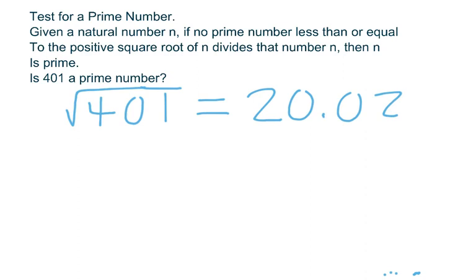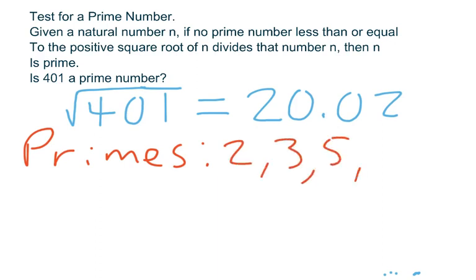You think about all the prime numbers that you know that are less than or equal to 20.02. You might use a sieve of Eratosthenes. You might have just a list of primes in your head. But the prime numbers that are less than or equal to 20.02 are 2, 3, 5, 7, 11, 13, 17, and 19.